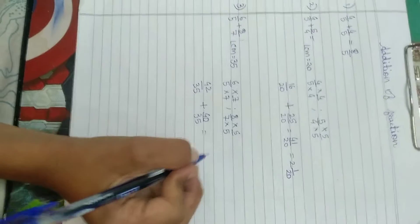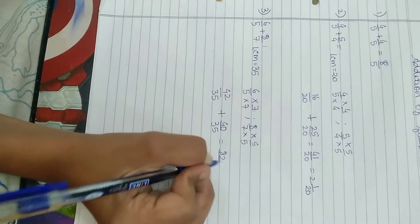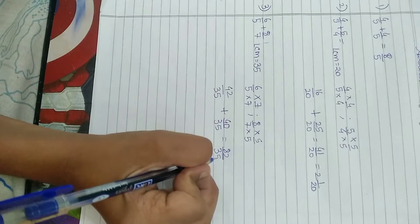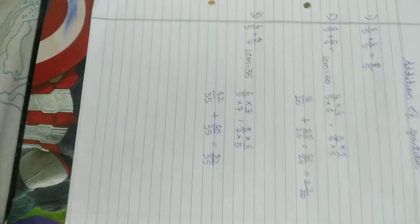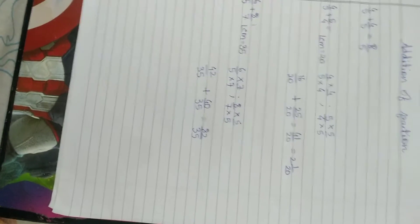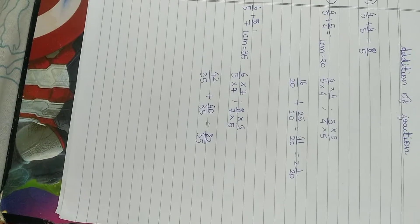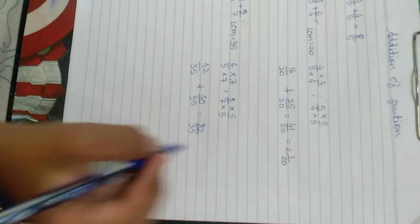The answer would be 82 by 35. And again, it is in improper form. So we will convert it into a mixed fraction. So it would be 2 and 12 by 35.